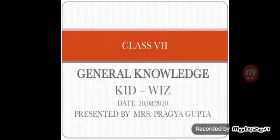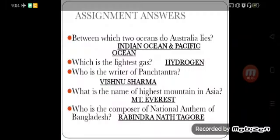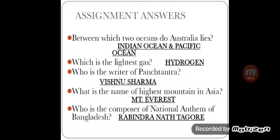Good evening children, here we are with another class of general knowledge, Kidwiz. We will start the assignment answers first. Between which two oceans does Australia lie? The answer is Indian Ocean and Pacific Ocean.